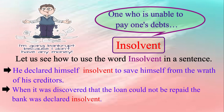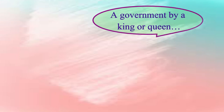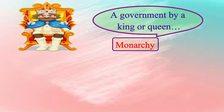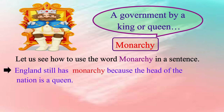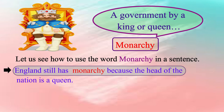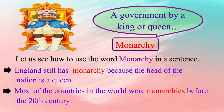Let us see the next group of words. A government by a king or queen, or we can simply say monarchy. A monarchy is a form of government in which a person, the monarch, is head of state for life or until abdication. Let us see how to use the word monarchy in a sentence. Please repeat after me: England still has monarchy because the head of the nation is a queen. Most of the countries in the world were monarchies before the 20th century.